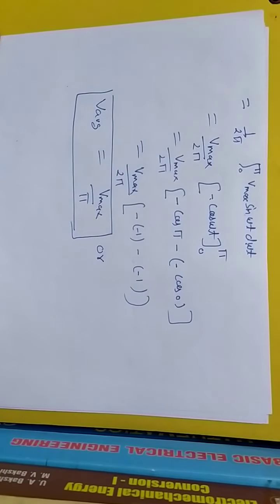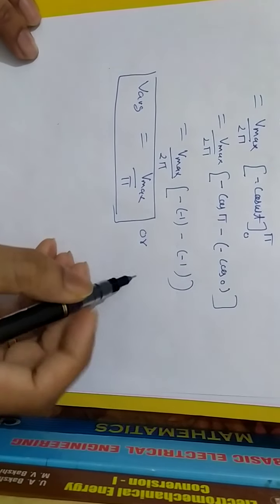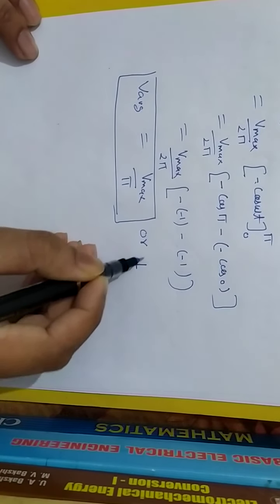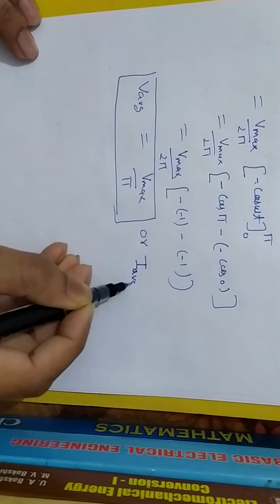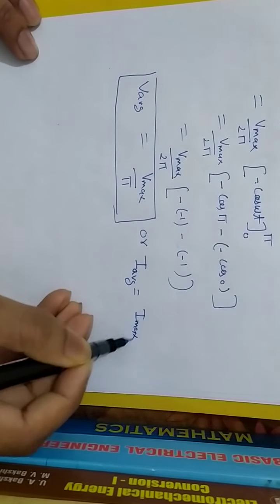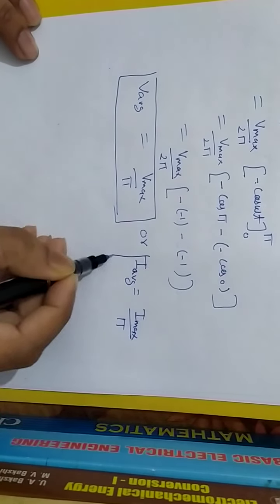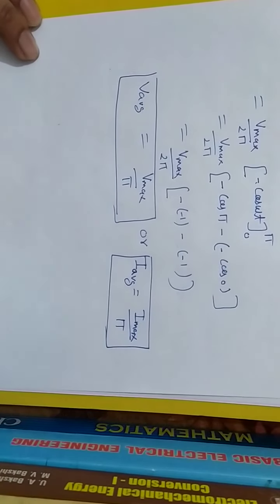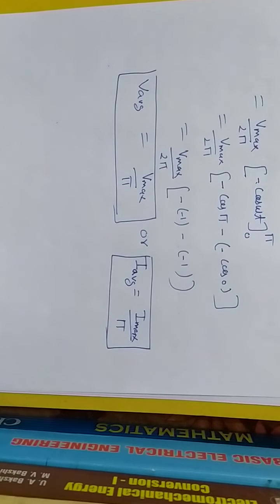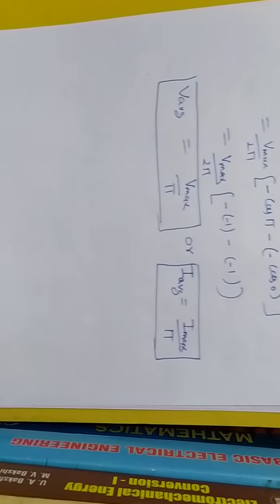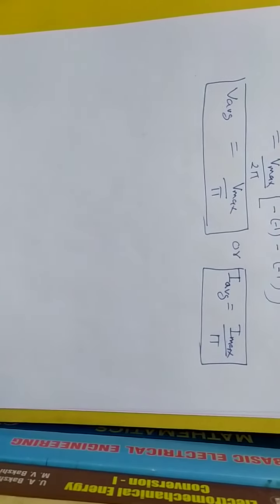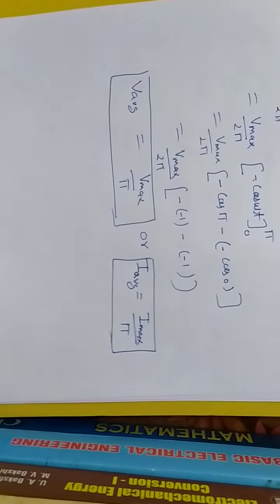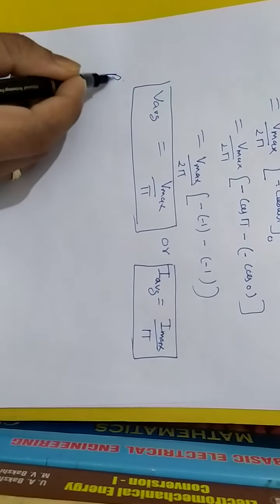So V_average = Vmax/π. Similarly for the current waveform, I_average = Imax/π. This is the average value of the half wave rectifier. Next we calculate the RMS value.